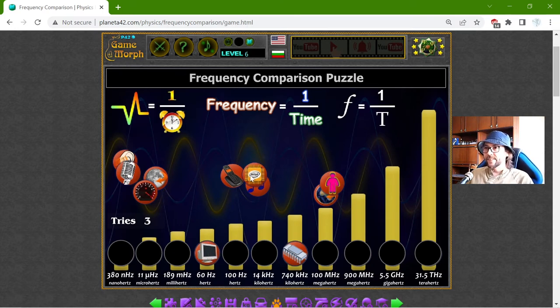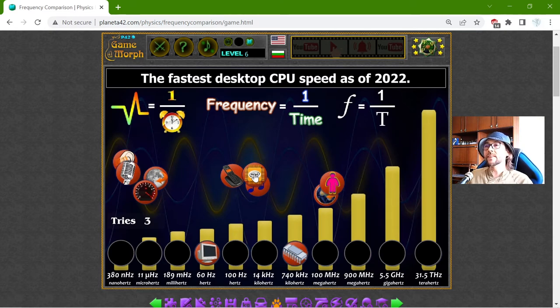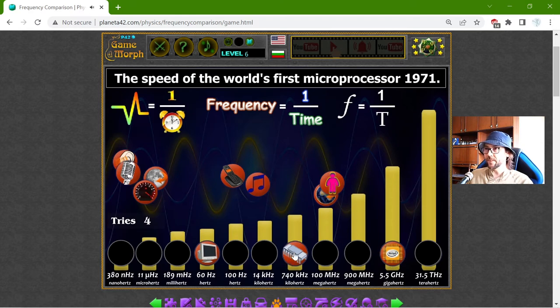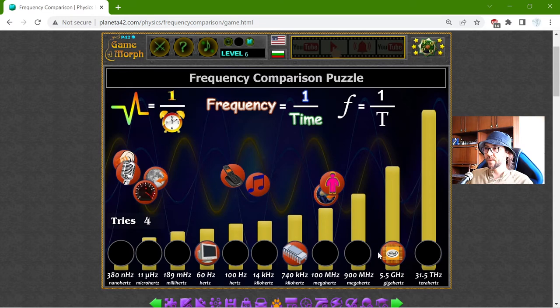Alright, this is another thing that I know. The fastest desktop CPU, that is the central processor unit, in the year 2022. And this is 5.5 GHz. So if I compare with the first processor...